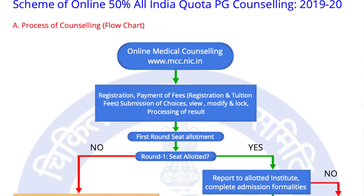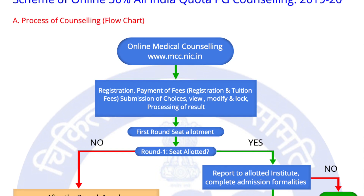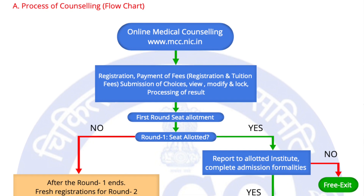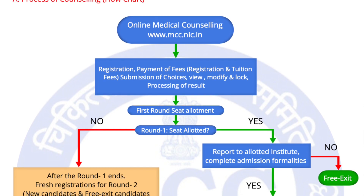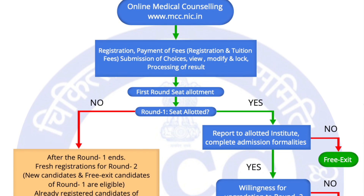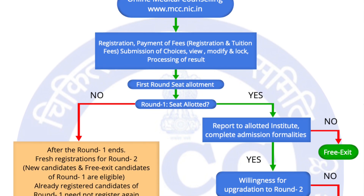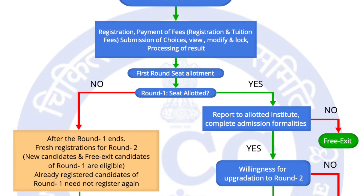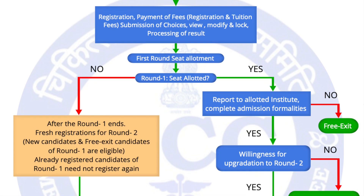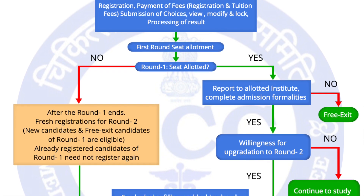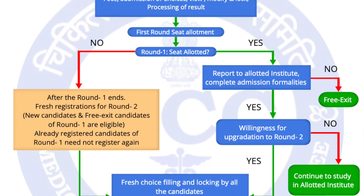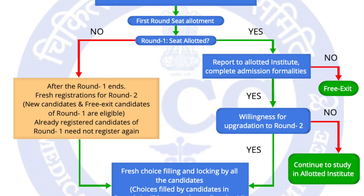After that, there is processing of results. There will be a first round of seat allotment followed by a second round. In the first round, if a seat is not allotted, fresh registrations for round two start. New candidates and free-exit candidates from round one are eligible to participate in round two, while already registered candidates of round one need not register again.